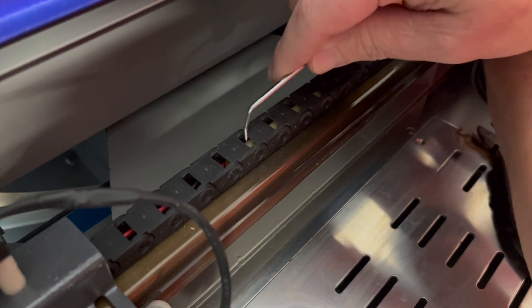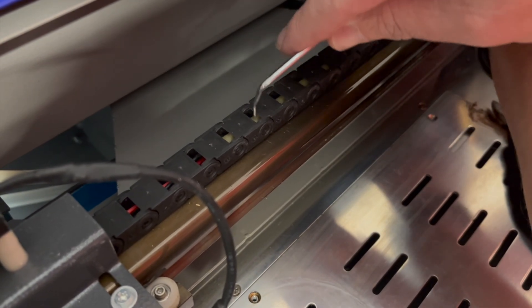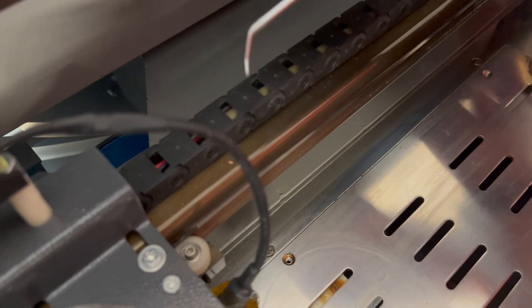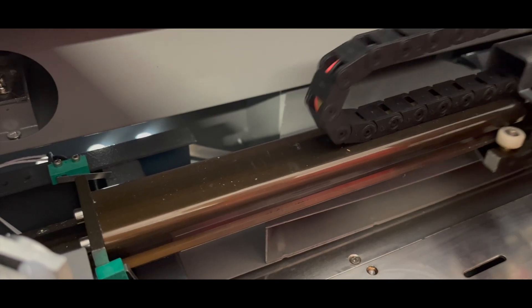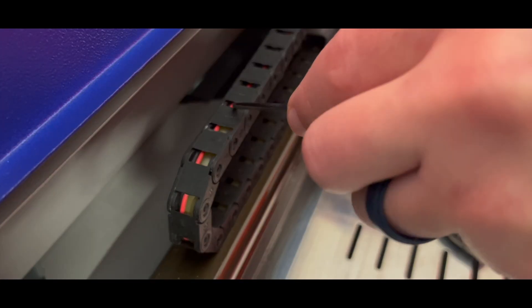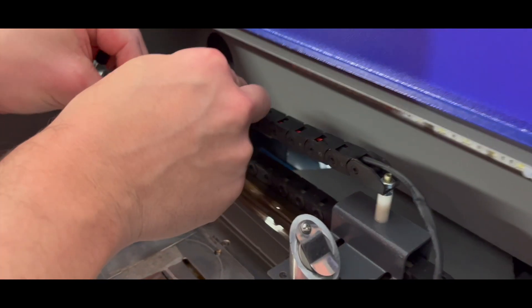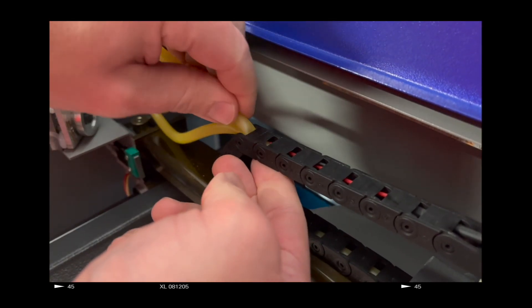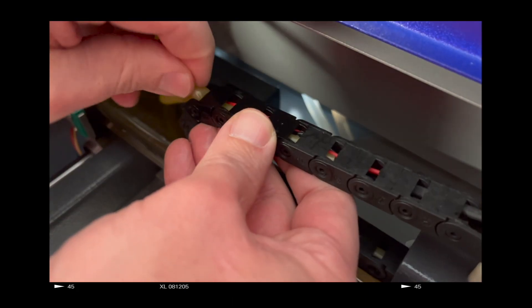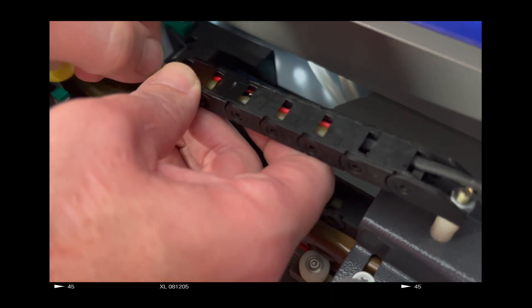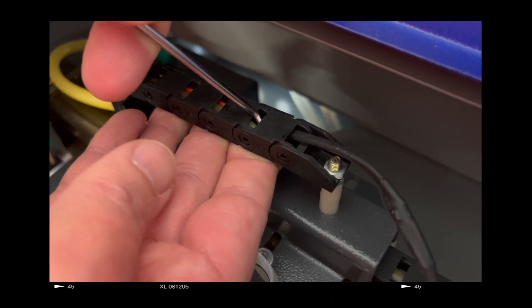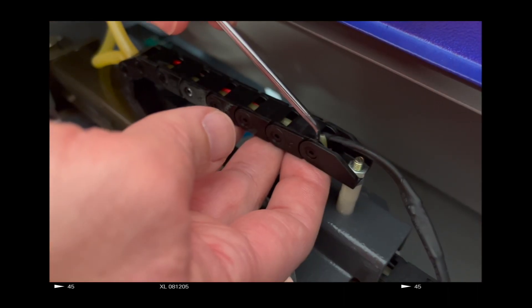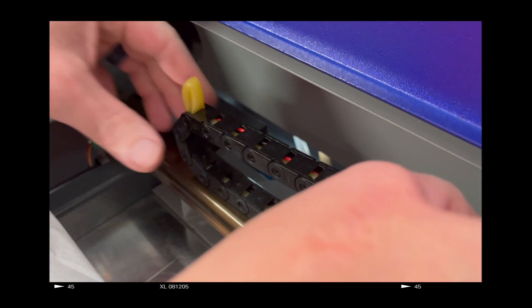I probably should have ran a smaller string or something in here first and then I could have connected it to the hose and then I could have just pulled it through but this seems to be working. I'm just going slow. Just put a little push on this end here and then kind of pulling it a little bit here with this little hook. Just a little bit further. There we go.